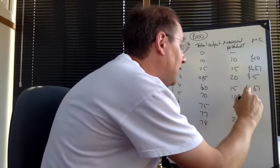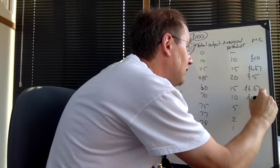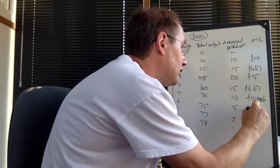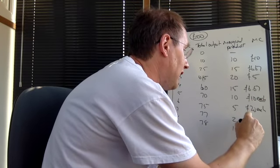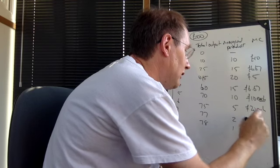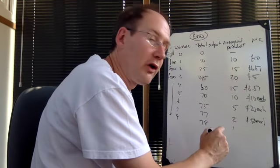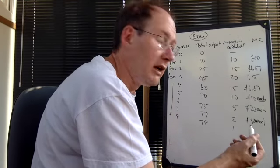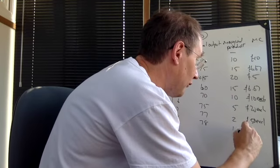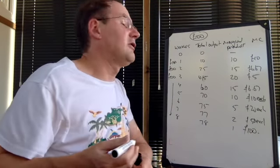£100 there. Each of those extra units costs. So these are each £10 each. They're £20 each. They're £50 each. And that one, we employ the eighth worker for £100, and she or he adds one unit. Therefore, that's £100 for that unit.